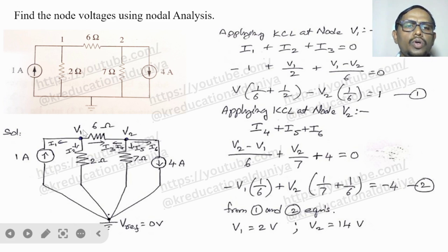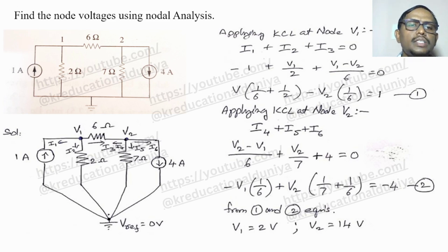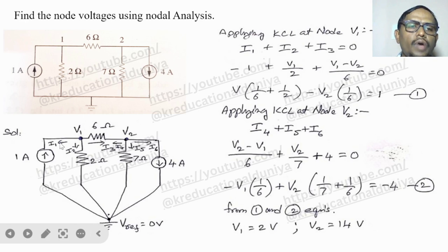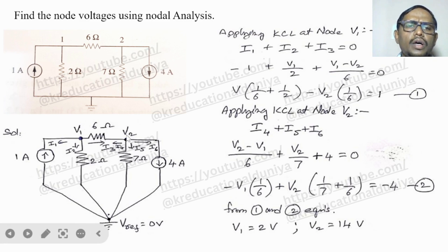At V1, assume that V1 is having very high potential. So whatever currents are flowing through V1, these are assumed currents: I1, I2, and I3. Similarly, at node V2, assume V2 has a high potential value. From V2, I4, I5, and I6 currents are flowing — these are the assumed currents.